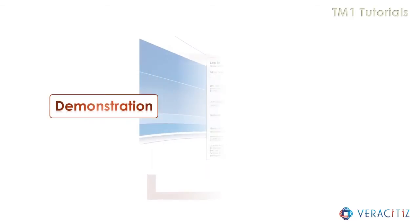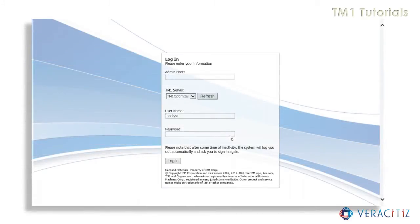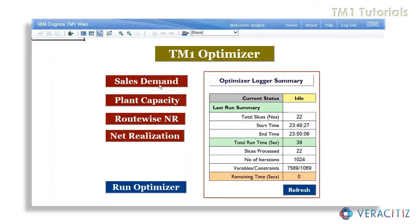Let us conceptualize the entire model with the help of the following illustration. The analyst logs into the TM1 web application to access the TM1 optimizer. The optimizer dashboard specifies the following particulars required to apprehend the model. On the left-hand side, we will input sales demand, production capacity, route-wise net realization per unit, and net realization. Similarly, on the right-hand side, we will be able to monitor the statistics of optimization in progress.